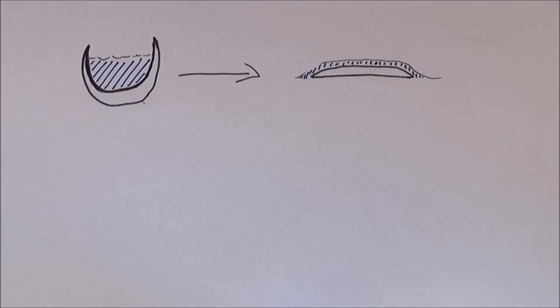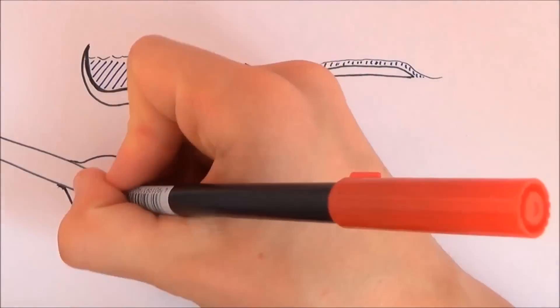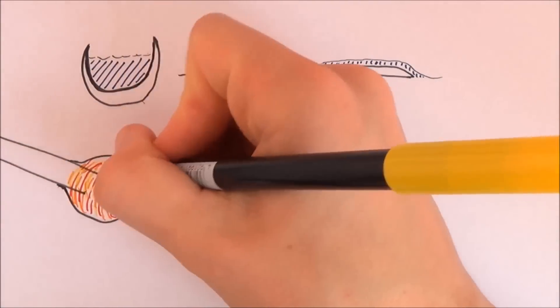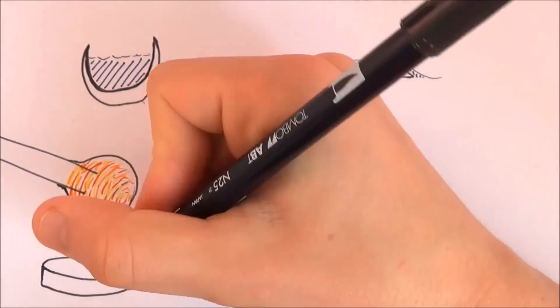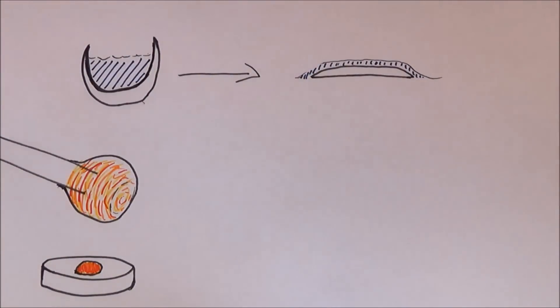However, looking at how glass was made in these areas, you can see that this is not the case. Once they have their molten glass, it would be rolled, blown, expanded, flattened and then finally spun into a disc so that it could be cut into panes.